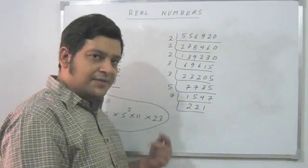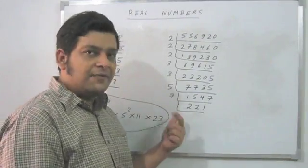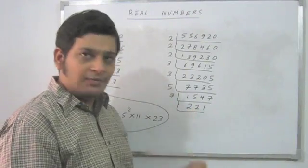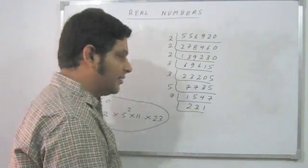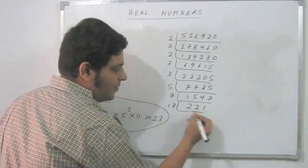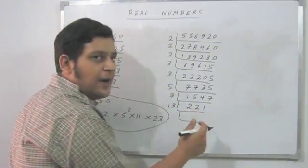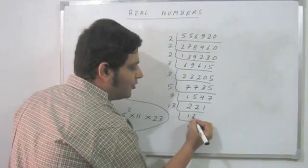Is it divisible by the next prime after 7, which is 11? 22, so it is not. Next one, 13. Yes, it is, because I know that 221 is 13 into 17.